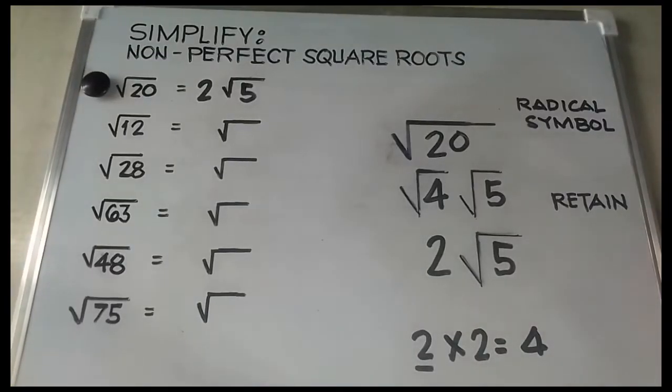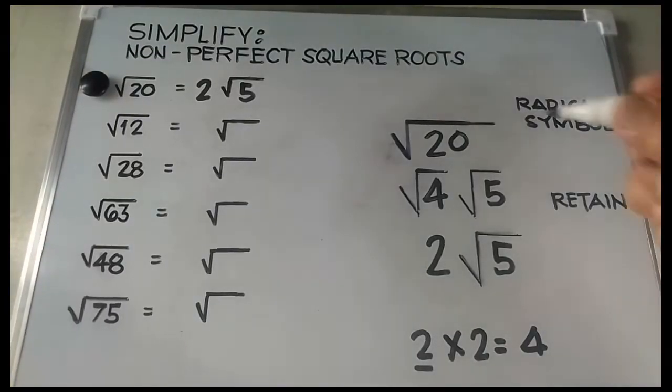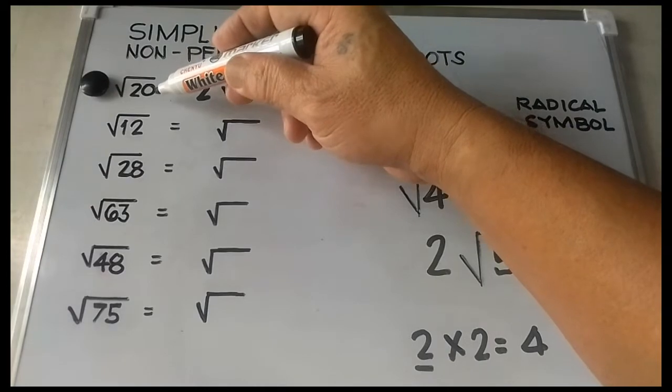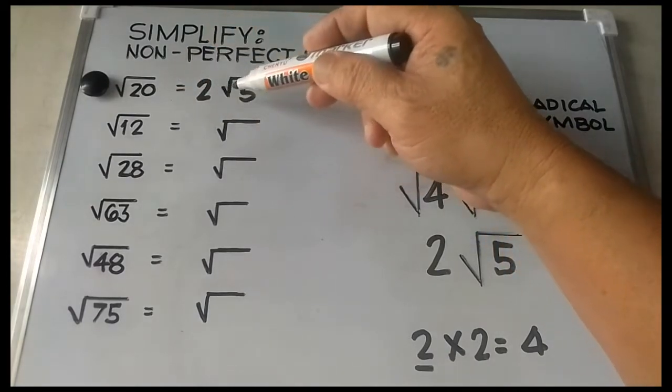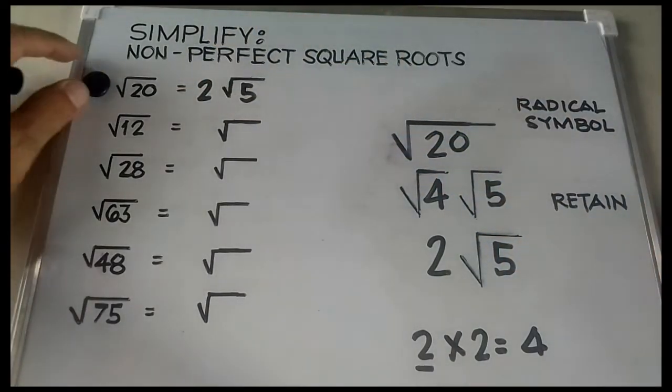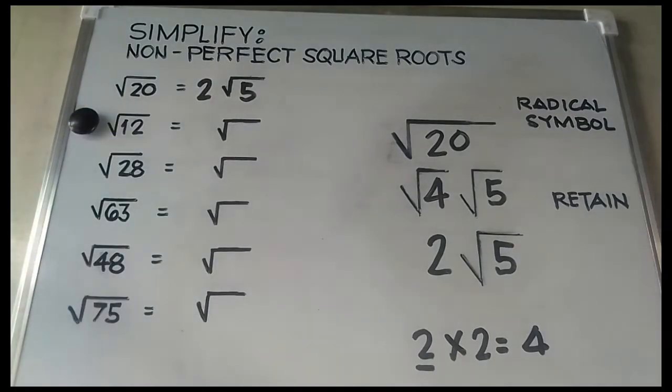So what is the square root of 20? The square root of 20 is 2 square root of 5. Next: square root of 12.